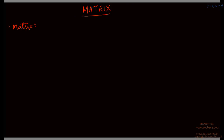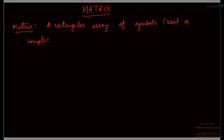A matrix is any rectangular array of symbols. Symbols can be real or complex numbers, and these are arranged along rows and columns. So, a matrix is a rectangular array of symbols — real or complex numbers along rows or columns.